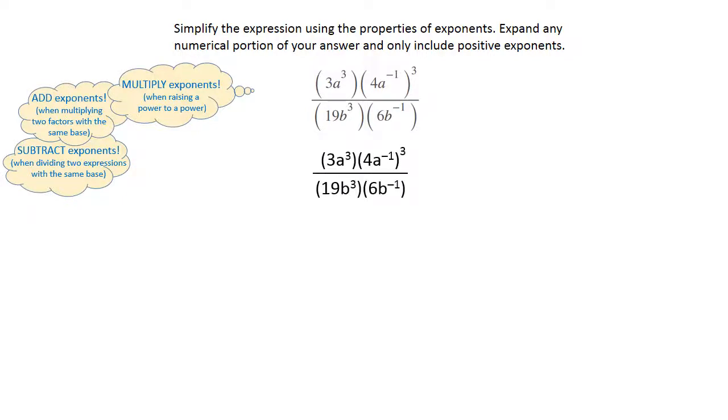Write your expression down and identify your factors. A factor is every number and every variable with an exponent on it. So each number and each variable, everything is separate. We have eight total factors that we have to do something with.